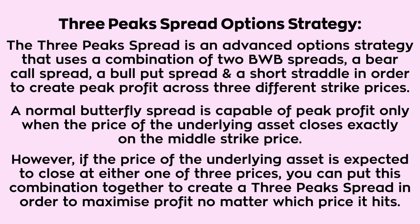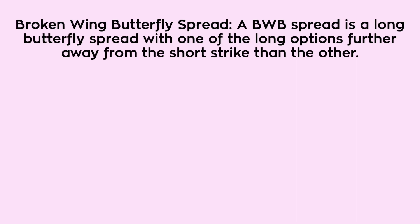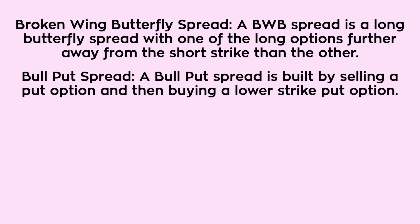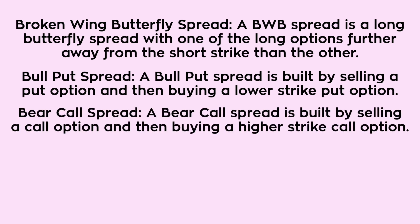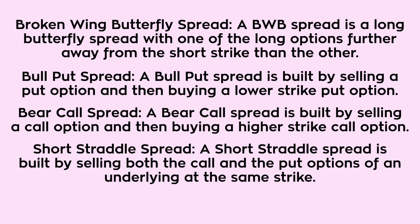Before we dive in, let's have a quick recap of the component strategies. A broken wing butterfly spread is a long butterfly spread with one of the long options further away from the short strike than the other. A bull put spread is built by selling a put option and then buying a lower strike put option. A bear call spread is built by selling a call option and then buying a higher strike call option. A short straddle is built by selling both the call and the put option of an underlying at the same strike price.